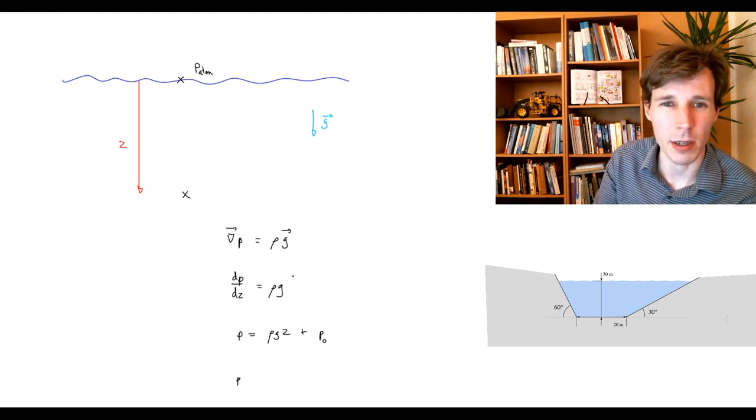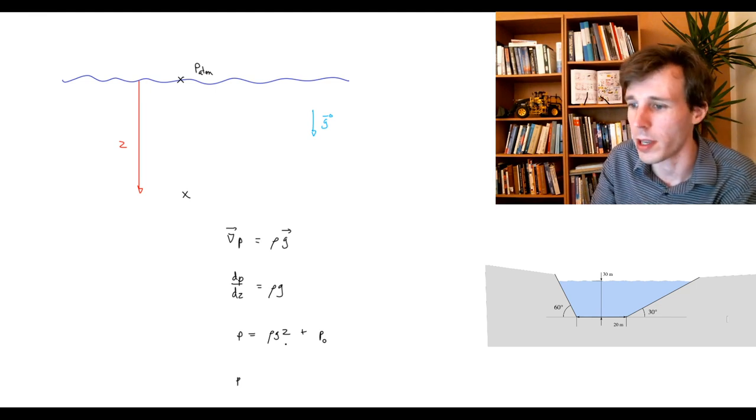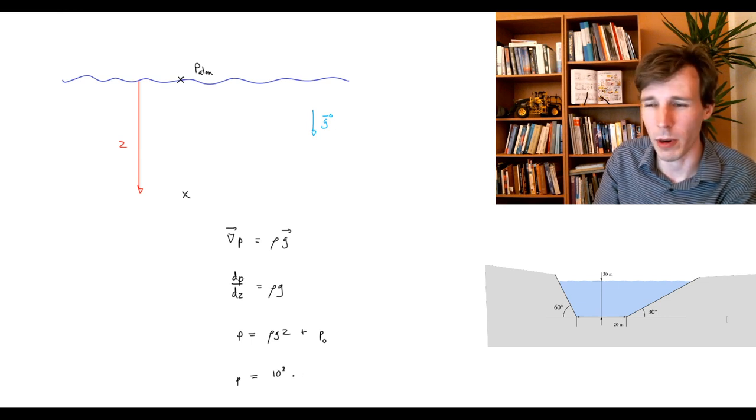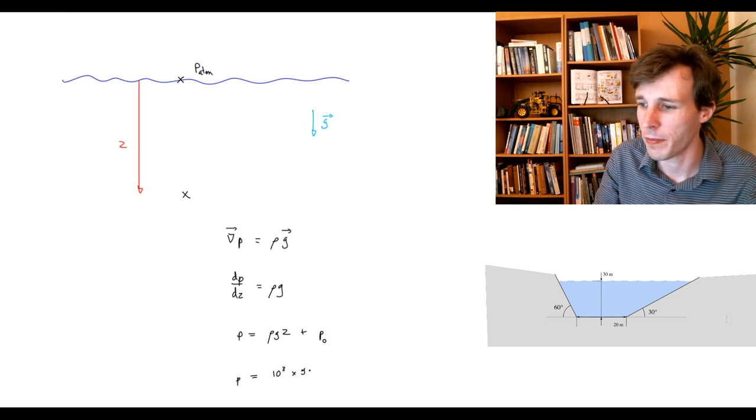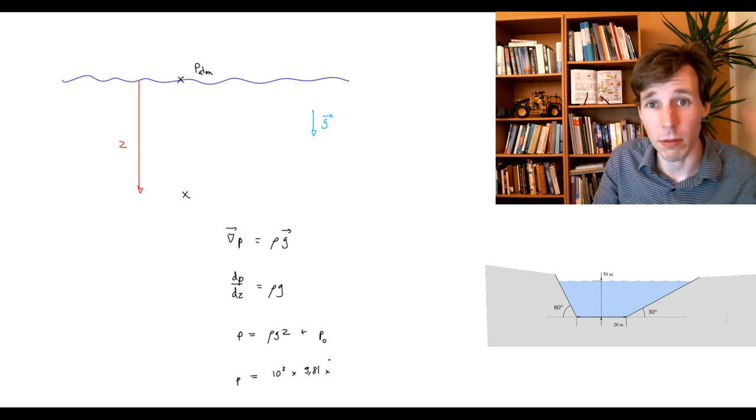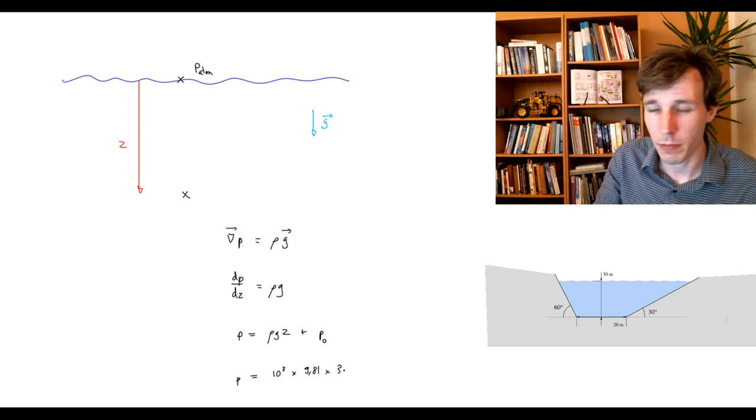which is shown just below here, 30 meters down inside water, then you take data for water, 10 to the power of 3 kilograms per meter cubed, multiply by G, which is 9.81, times the Z value, which is in this case 30.